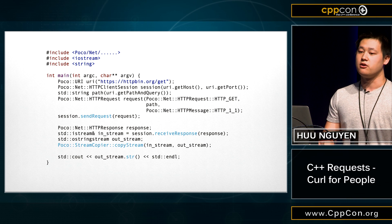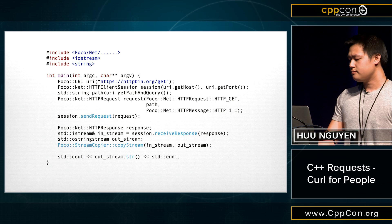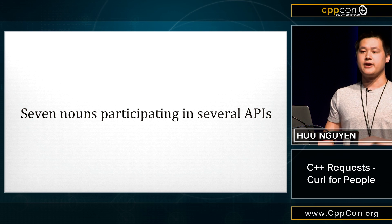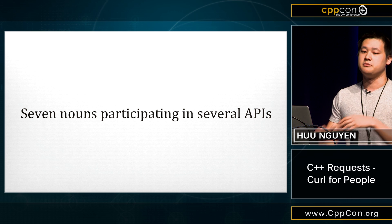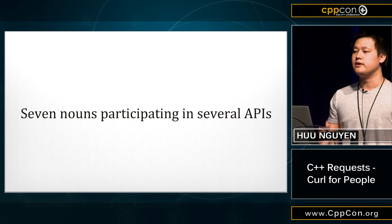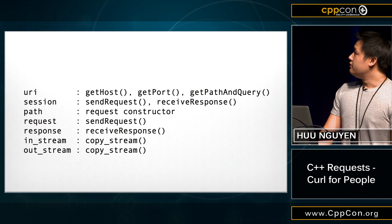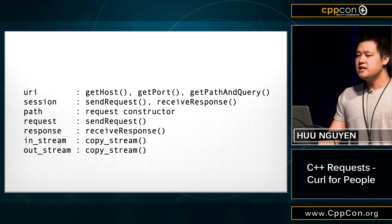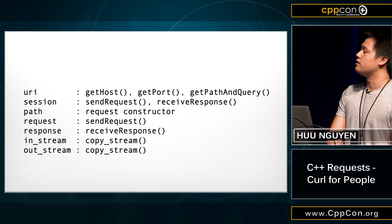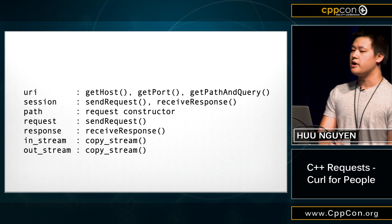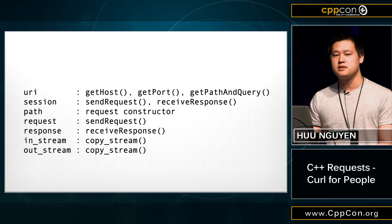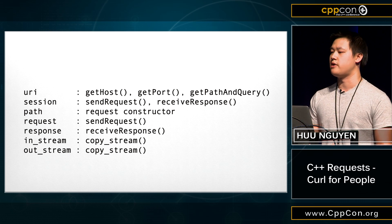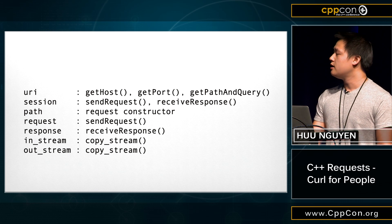That's the same request we did earlier in our imaginary API. There are seven nouns here participating in several different APIs. When I tell you that HTTP is a verb-centric language, the issue with all these nouns interacting is that the mental model required to keep track of everything is very high. These are several different APIs, and individually they make sense — a URI should let you get a port or a host, a session should be able to send a request and receive a response. But the context requirement is so high that if you call send request twice, or receive response twice, you're not sure what's going to happen.